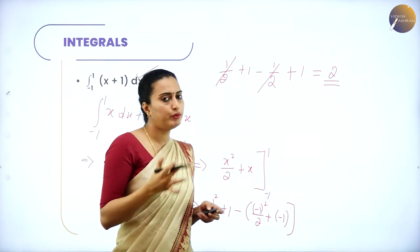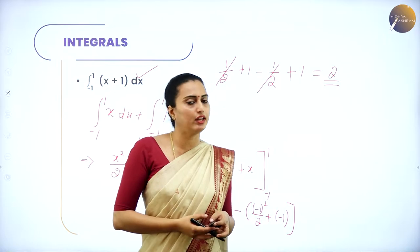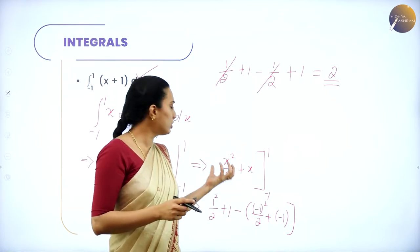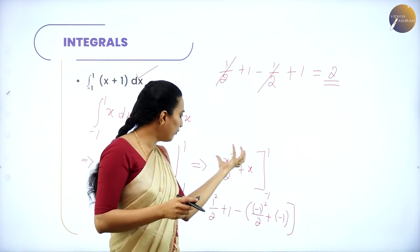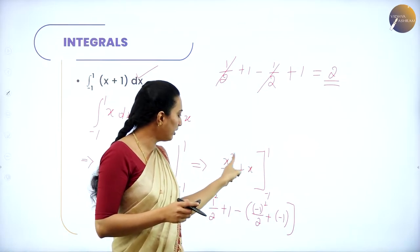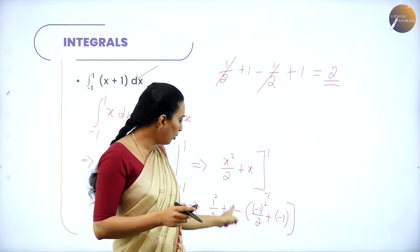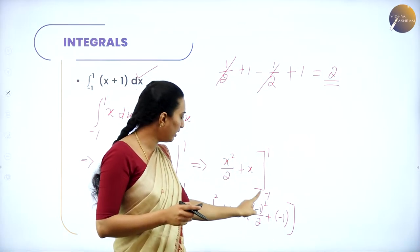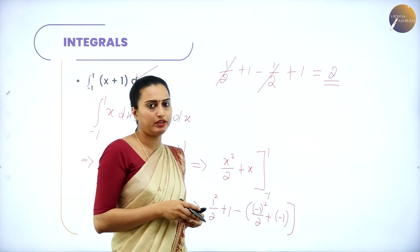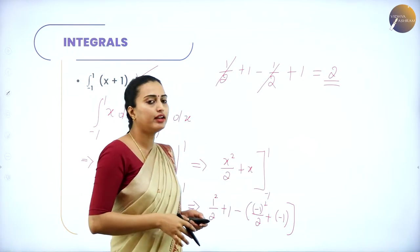To summarize: first apply the upper limit wherever x appears — apply 1, then place a minus sign, open the bracket, and apply the lower limit -1 wherever x appears. This method ensures you won't get confused when evaluating definite integrals.